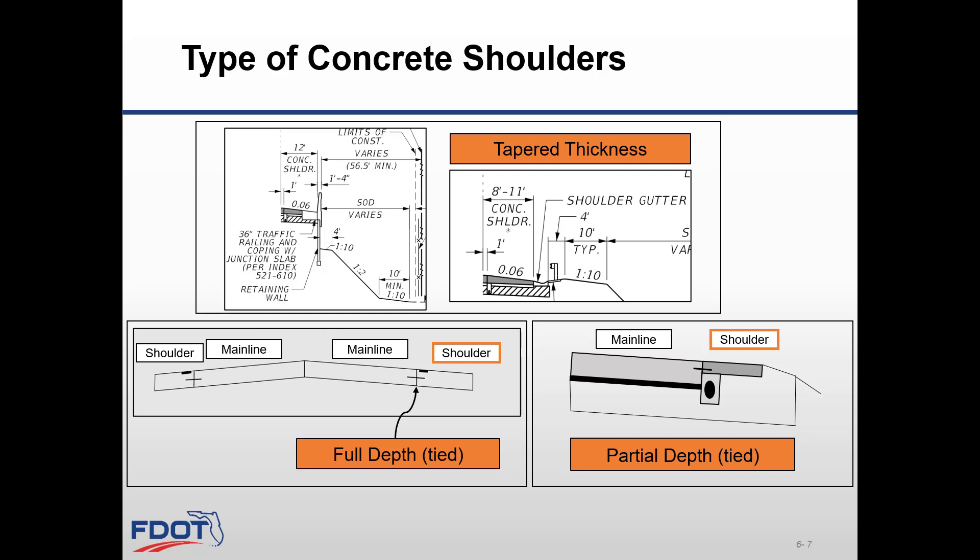Full depth tied: full thickness concrete shoulders tied may be used on limited access urban facilities, or where use for future temporary traffic control or widening is likely — that's the bottom left detail. Partial depth tied: partial thickness tied may be used in limited access rural, non-limited access arterials, and collectors. The design thickness can be based on 3% ESAL from the mainline, and the minimum thickness is also no less than 6 inches — that's the bottom right detail.